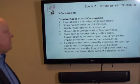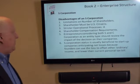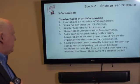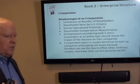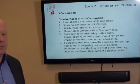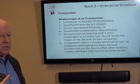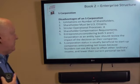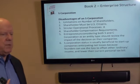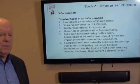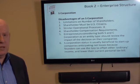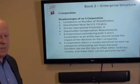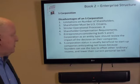Disadvantages: you have a limitation of 100 shareholders in an S-Corporation, and they must be U.S. citizens. You have stricter operational processes, and you have to be careful not to sell stock to ineligible parties. You also cannot accumulate retained earnings — any profits will still be taxed out to the individuals.